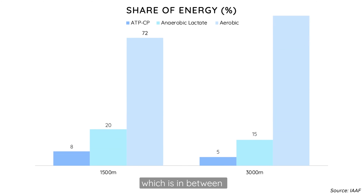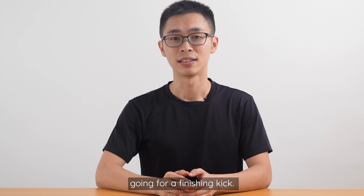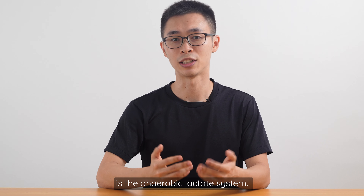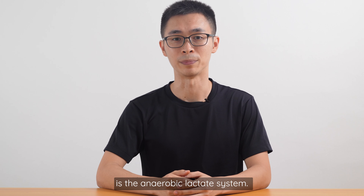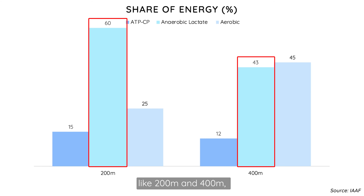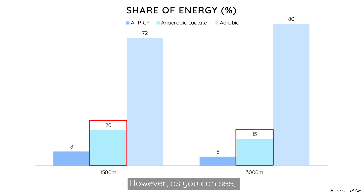In the 2.4, which is in between the 1.5k and 3km distances, you most likely won't be using much of the ATP-CP system, except if you're going for a finishing kick. The other energy system that doesn't utilize oxygen is the anaerobic lactate system. It plays a major part in distances like 200m and 400m, and a smaller part in distances like 1.5k and 3km. However, it's still significant enough for us to work on it when training for the 2.4.